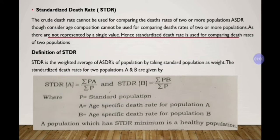Now going for the definition of standardized death rate. Standardized death rate is the weighted average of ASDR of a population, taking standard population as weight. When comparing populations A and B, the formula is: STDR of A equals summation P×A divided by summation P, where P stands for standard population and A is the age-specific death rate of population A.